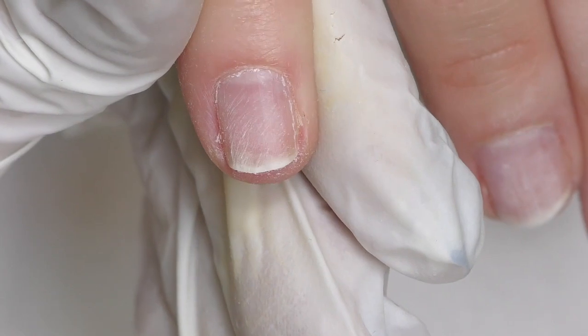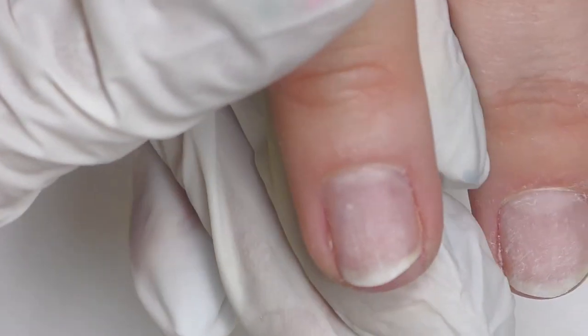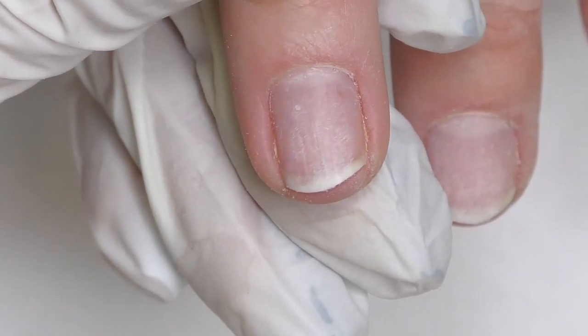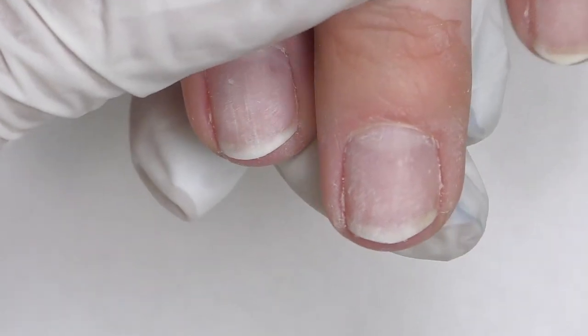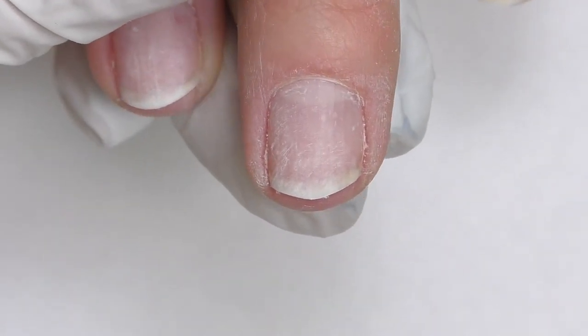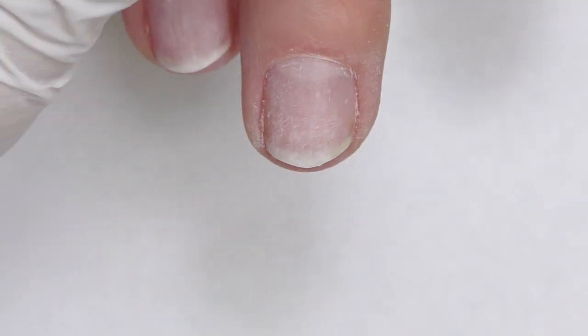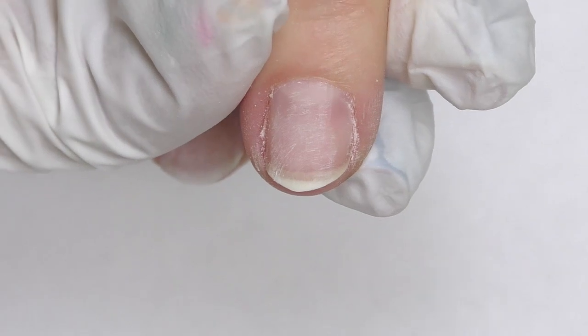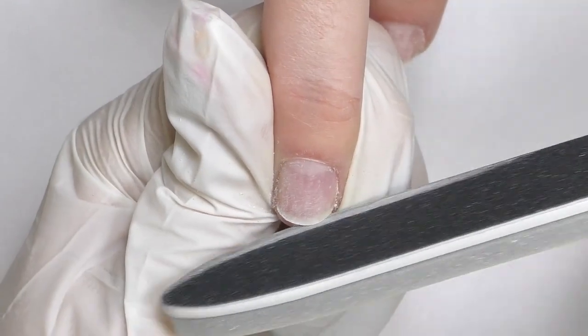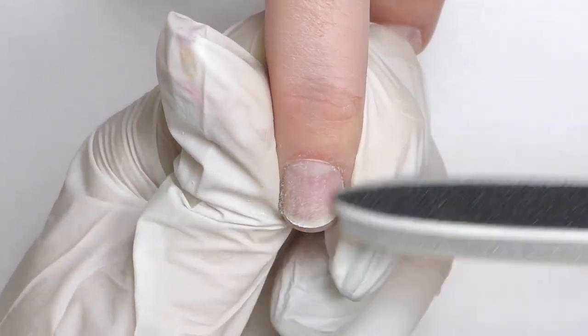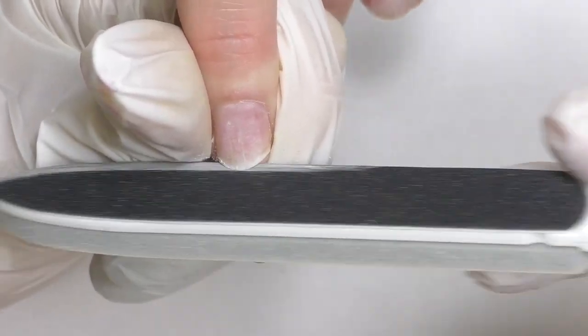Her nails are a bit damaged after removing gel polish and also they're a bit over-filed and some of the nails are broken. So she wants to have short nails but to have the same shape and length on all nails. First, I will file the free edge.